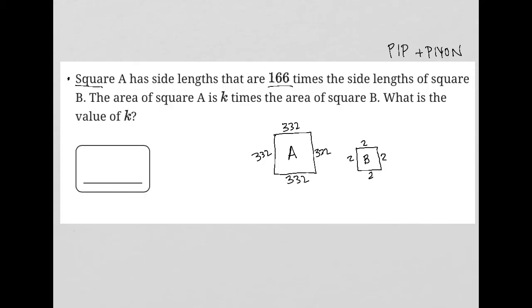The next part of this question says the area of square A is K times the area of square B. Well, what is the area of square B? The area of square B, or any square, is just side times side, so the area here would equal 4.